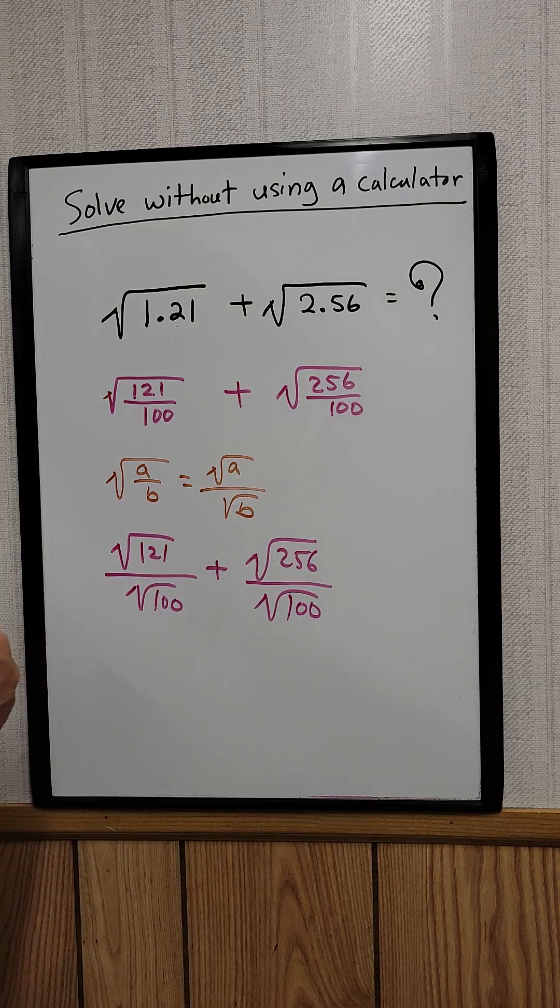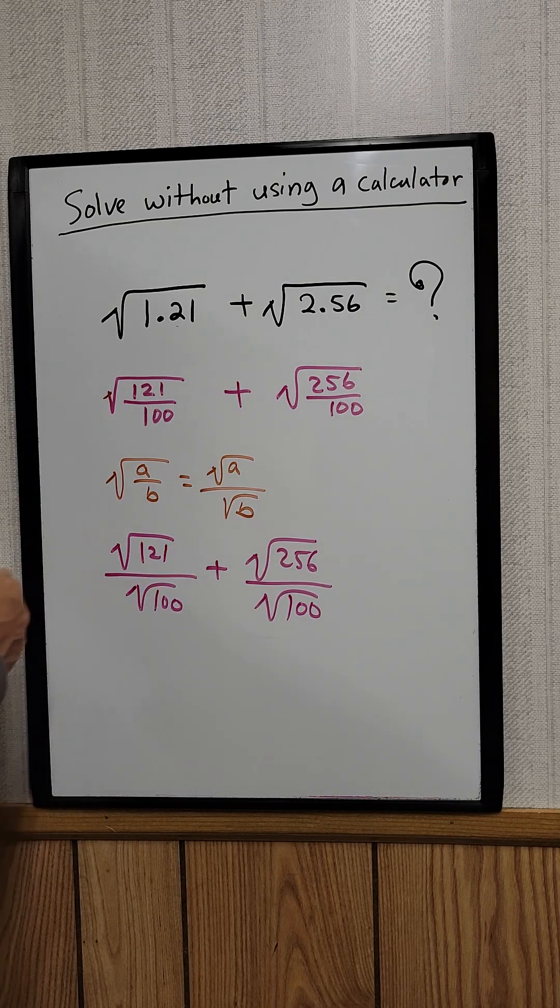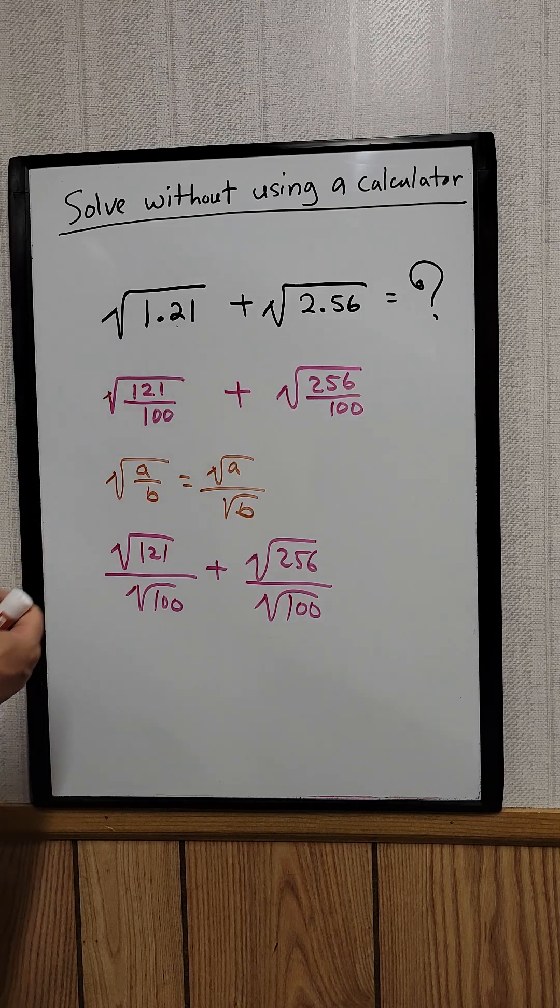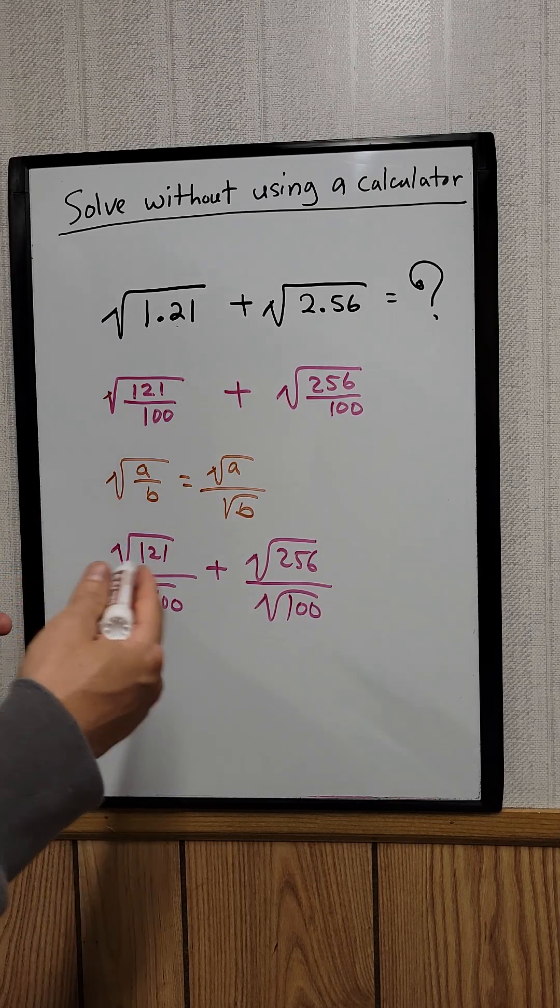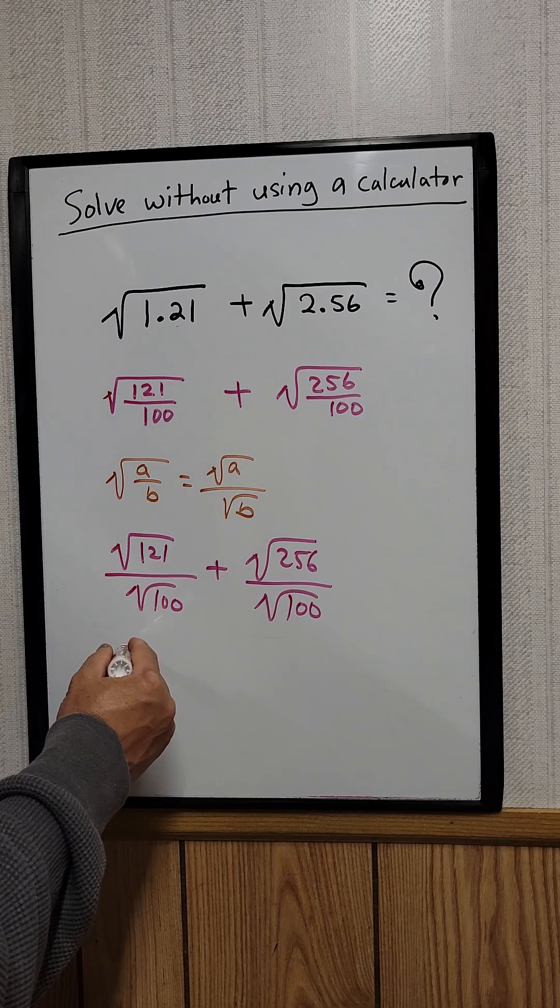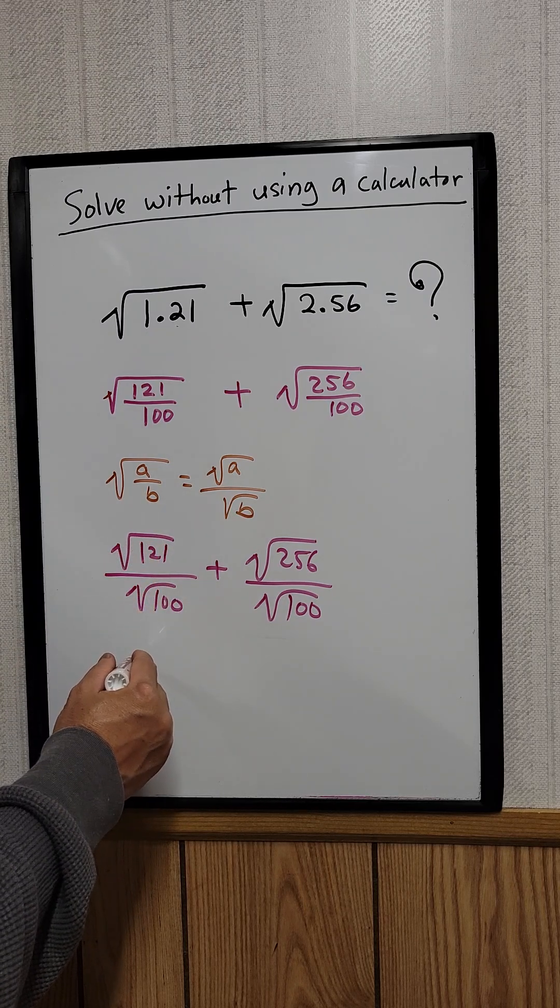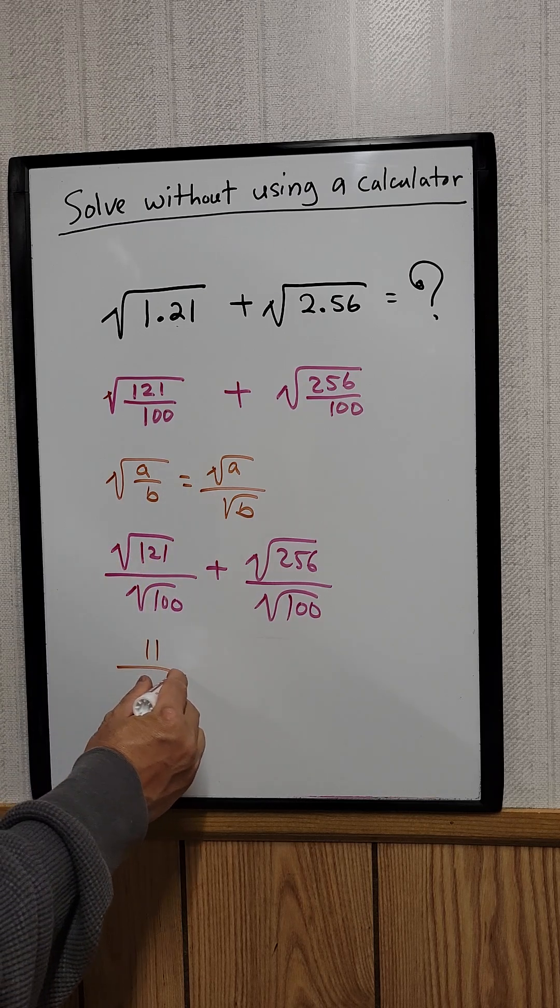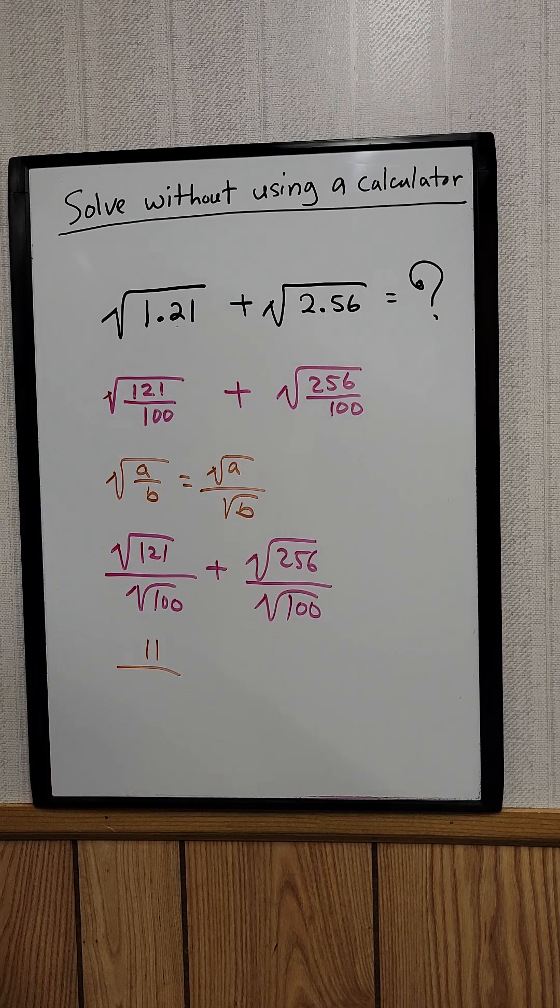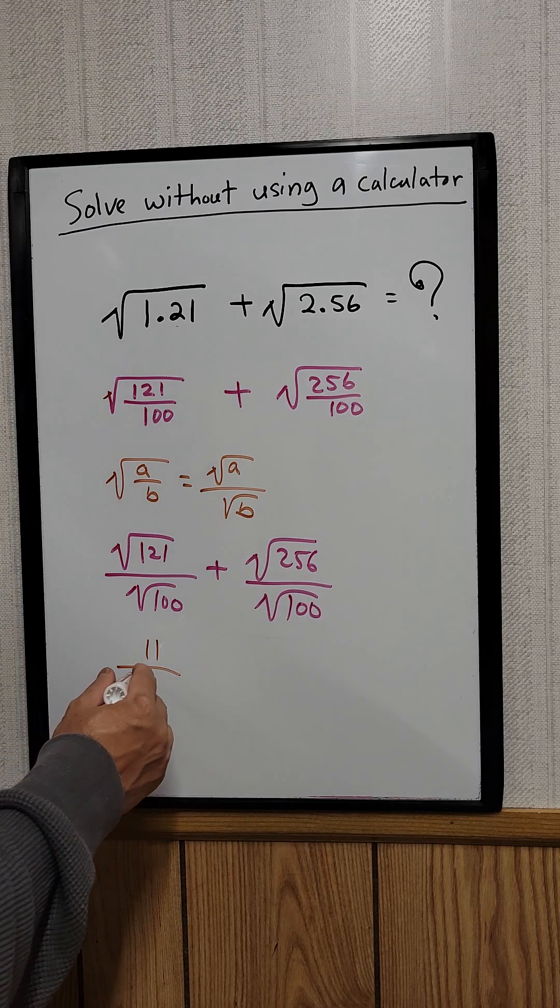What is the square root of 121? 121 is just 11 times 11, so that would be 11 squared. So that's a perfect square, a perfect square right here would be 11. And the square root of 100, that's another perfect square. That's 10.